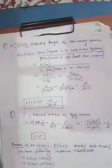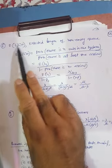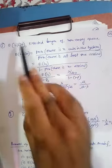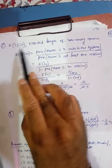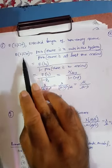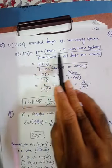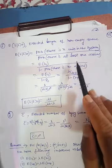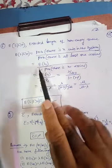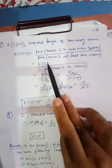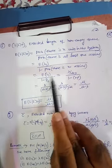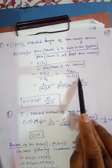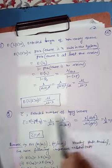The second-last parameter is the expected length of a non-empty queue: E[L | L > 0]. This equals ELS divided by the probability that there is at least one customer, i.e., ELS/(1 − P₀). Substituting ELS = ρ/(1−ρ) and P₀ = 1−ρ, we get E[L | L > 0] = [ρ/(1−ρ)] / ρ = 1/(1−ρ).